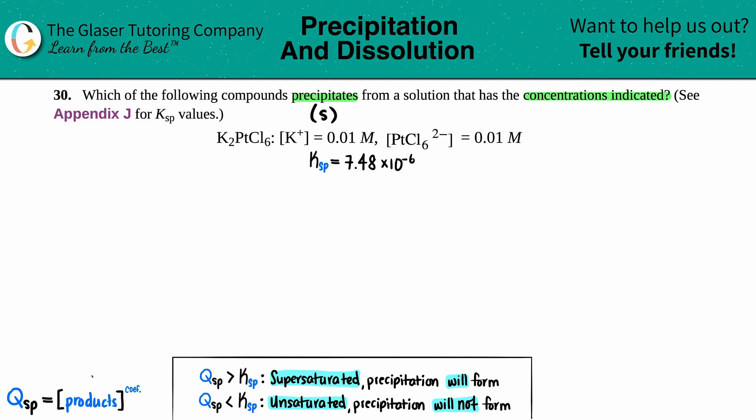They already gave us what the two ions are so they made this a little bit easier for us. Let's just start writing the balanced equation. I have K2PtCl6 that's a solid, this is going to come to equilibrium, and here are the two ions: K+ plus PtCl6 2-.